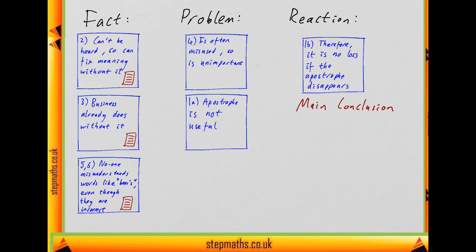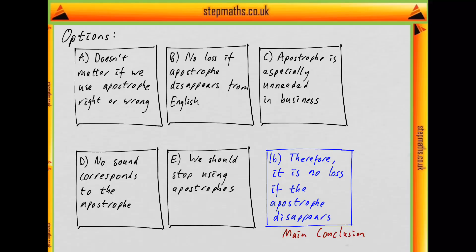Now let's look at which of the options best expresses that. Here are my five options and this is my main conclusion. We're looking at something that paraphrases this as closely as possible. We should immediately be drawn to B because it also talks about there being no loss if something happens. It's saying there's no loss if the apostrophe disappears from English punctuation. That's essentially what the conclusion is saying. So it looks very much like B is going to be the answer. Let's just rule out the other options.